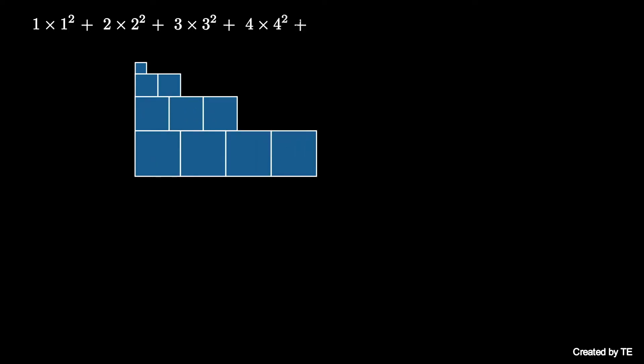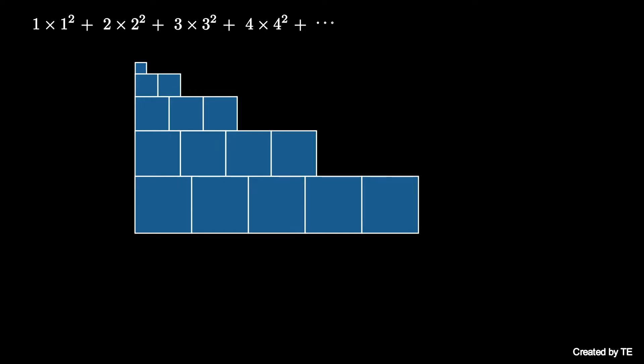Let's build an expanding triangular array of squares, where the first row has one 1×1 square, the second row has two 2×2 squares, the third row has three 3×3 squares, the fourth row has four 4×4 squares, and so on.